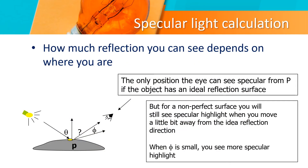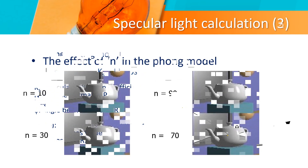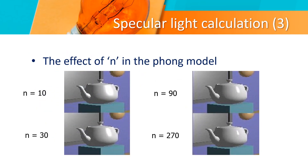Specular Light Calculation: how much reflection you can see depends on where you are. The only position the eye can see specular from point P is if the object has an ideal reflection surface. But for a non-perfect surface, you will see specular highlight when you move a little bit away from the ideal reflection direction. When theta is small, you see more specular highlight. The effect of n in the Phong model — image is given below.